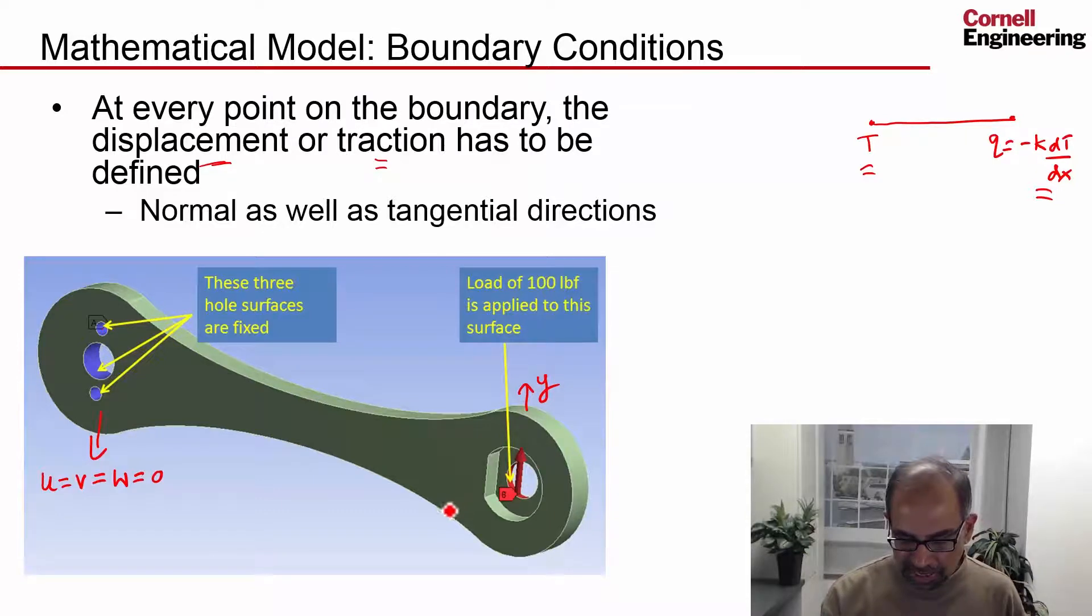Over here at this boundary where we put the load, it's going to set the y component of traction to be 100 pounds (not my favorite unit) divided by the area of the surface highlighted in red.